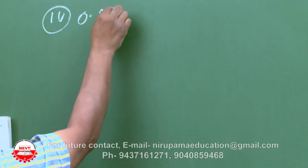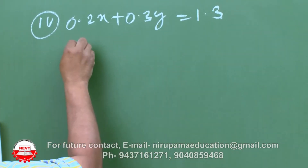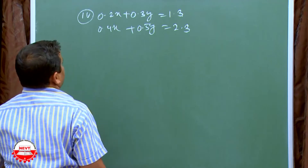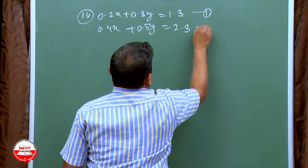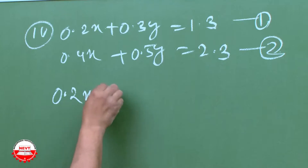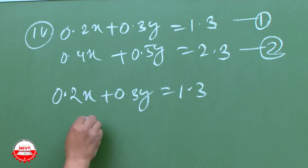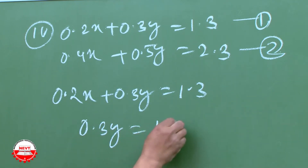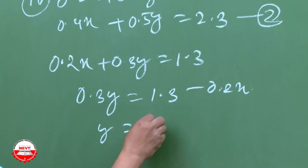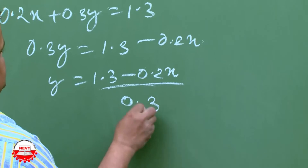For the fourth part: 0.2X plus 0.3Y is equal to 1.3 (equation 1), and 0.4X plus 0.5Y is equal to 2.3 (equation 2). From equation 1, rearranging: 0.3Y is equal to 1.3 minus 0.2X, so Y is equal to (1.3 minus 0.2X) by 0.3. This is equation 3.